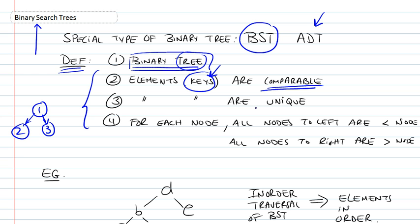All the elements in the tree, all the keys, are unique. We cannot have two same elements in the same tree.